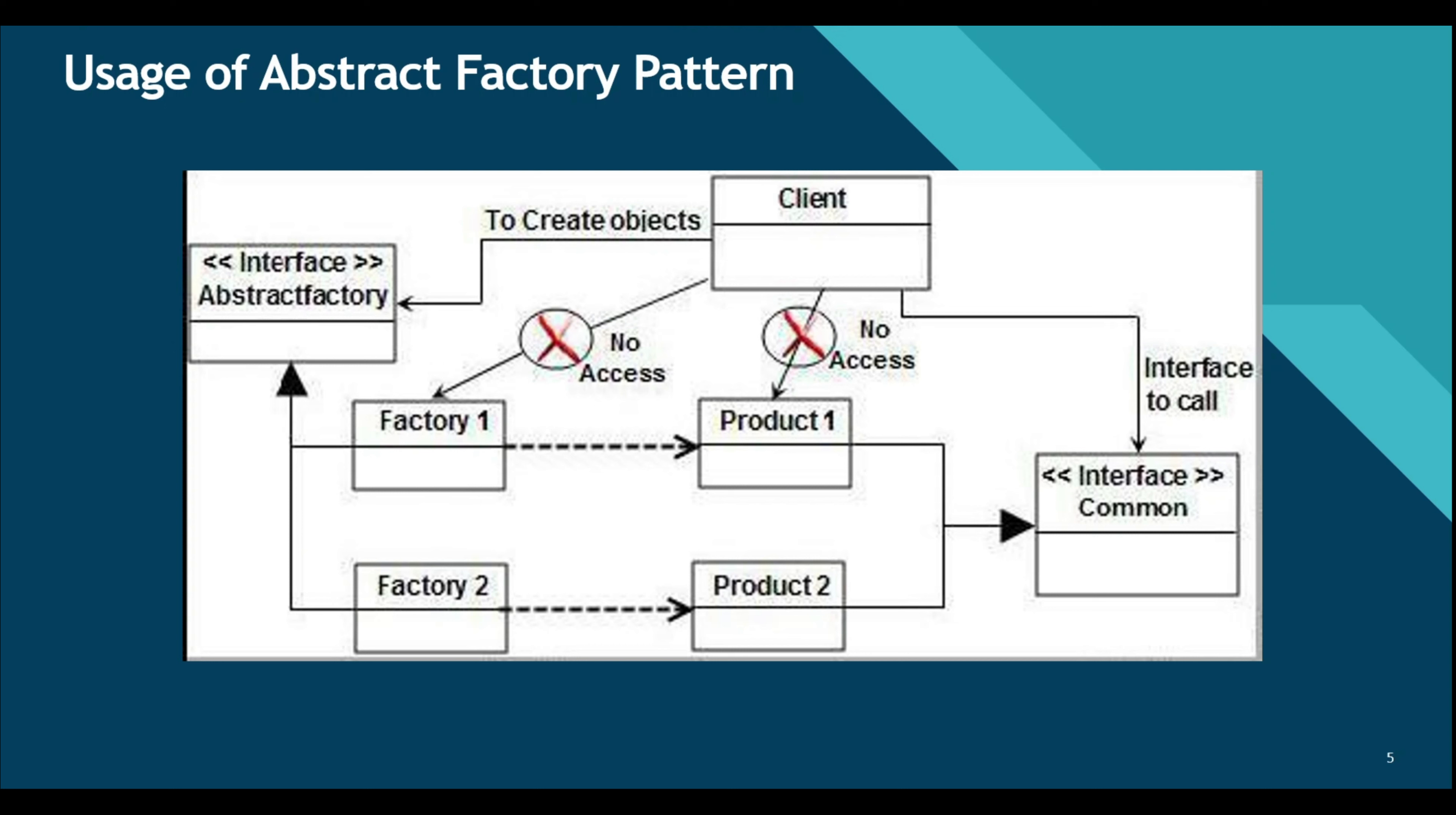Now factory classes stand on top of concrete classes which are again derived from a common interface. So we have these concrete classes, product one and product two, and again, these two classes have a common interface. The client who wants to use concrete classes will only interact with the interfaces: the abstract factory interface and the common interface from which the concrete classes inherit.